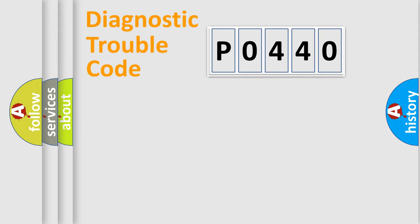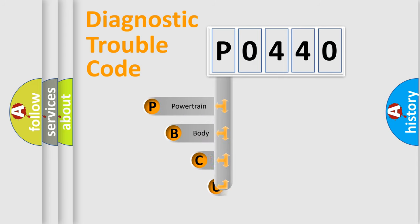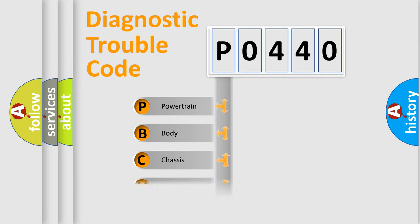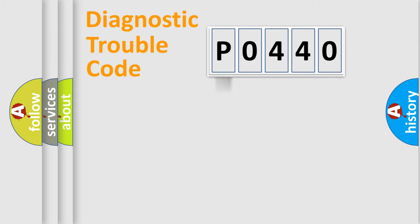Let's look at the history of diagnostic fault code composition according to the OBD2 protocol, which is unified for all automakers since 2000. We divide the electric system of an automobile into four basic units: Powertrain, Body, Chassis, and Network.